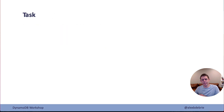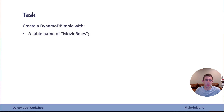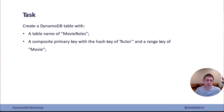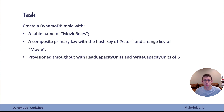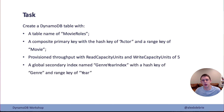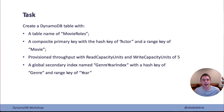Now let's move into the task. I want you to create a DynamoDB table named MovieRoles with a composite primary key — hash key of actor and range key of movie — with provisioned throughput of 5 read and 5 write capacity units. Here's the big addition: also create a global secondary index named genre-year-index with a hash key of genre and a range key of year. Go ahead and check the documentation, take some time, pause this, and we'll come back and see how to do it.